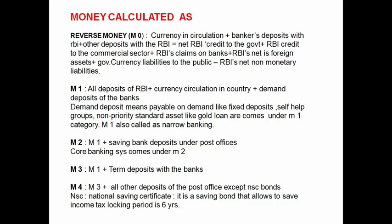M3 equals M1 plus term deposits with banks. M4 equals M3 plus all other deposits of post offices, except NSC (National Savings Certificates) bonds.